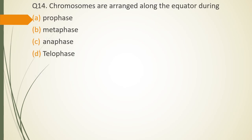Question No. 14: Chromosomes are arranged along equator during prophase, metaphase, anaphase or telophase. During which phase of the cell division chromosomes are arranged along equator? The correct answer is option B, metaphase.